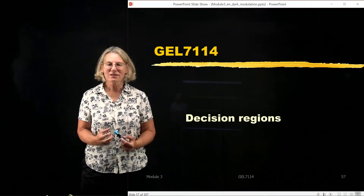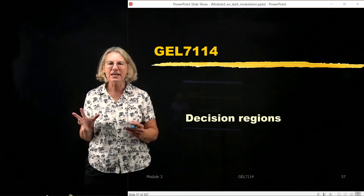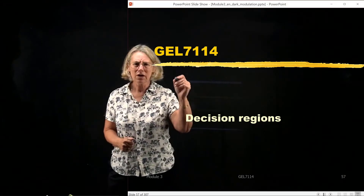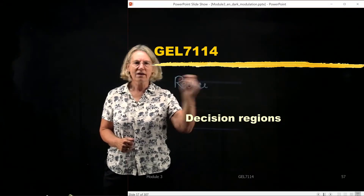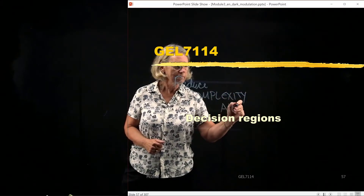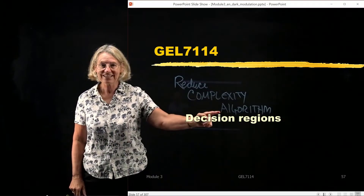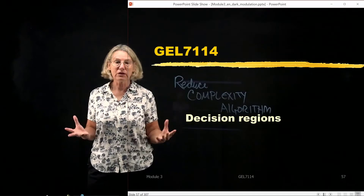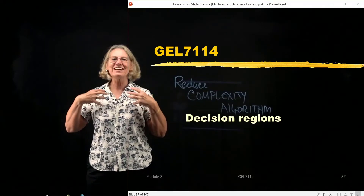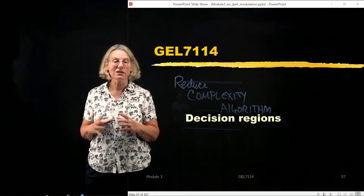We have seen how signal space can be exploited to reduce the complexity of the receiver structure — the number of correlators and test statistics being calculated and delivered to the decision algorithm. What we're going to address now is how to use signal space to reduce the complexity of the algorithm itself, by thinking in terms of geometry and decision regions.